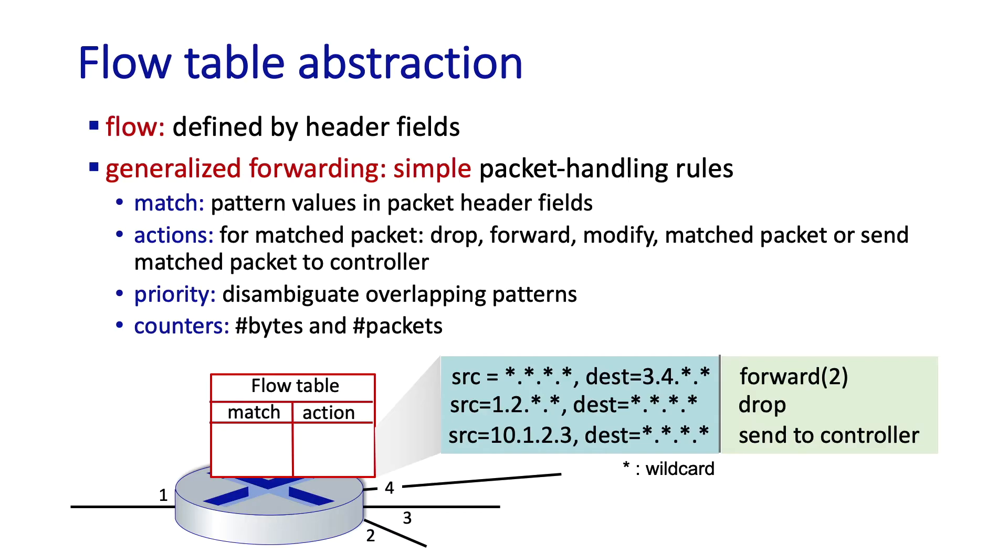Now, if multiple flows, that's to say multiple rows, are matched, some kind of preference priority mechanism is going to be needed to select the specific action to be taken. So far our discussion's been generic, so let's now take a look at a specific generalized forwarding approach that's been standardized. It's known as OpenFlow, and we'll take a look at the original OpenFlow 1.0 specification.